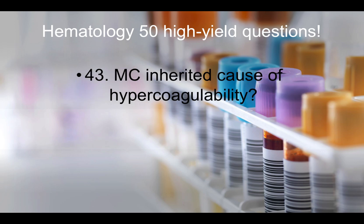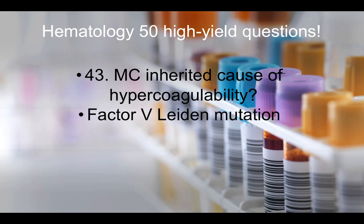Question forty-three: Most common inherited cause of hypercoagulability — that would be factor V Leiden mutation.